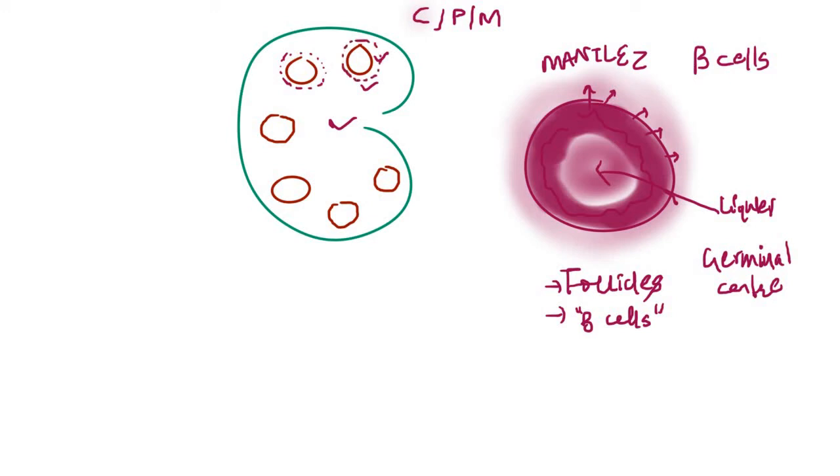Mantle zone lymphoma is the neoplastic growth of B cells that arises and expands in the mantle zone. In mantle zone lymphoma, the neoplastic proliferation primarily occurs in this mantle zone, which is the zone of loosely packed lymphocytes present in the periphery of the follicles.